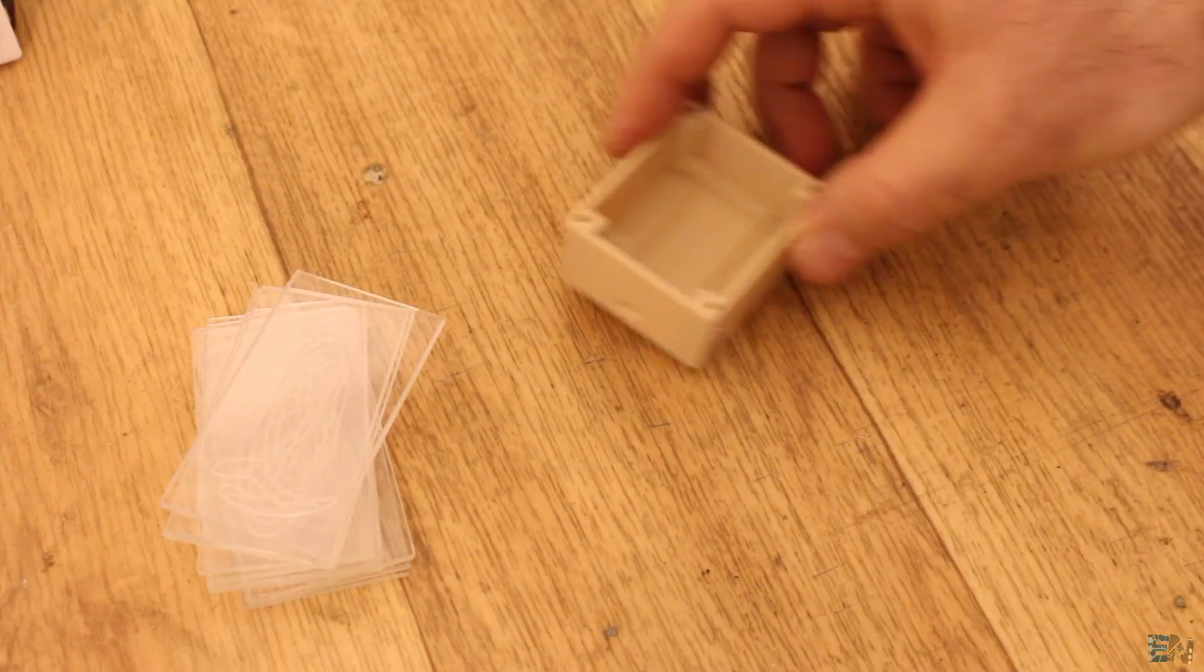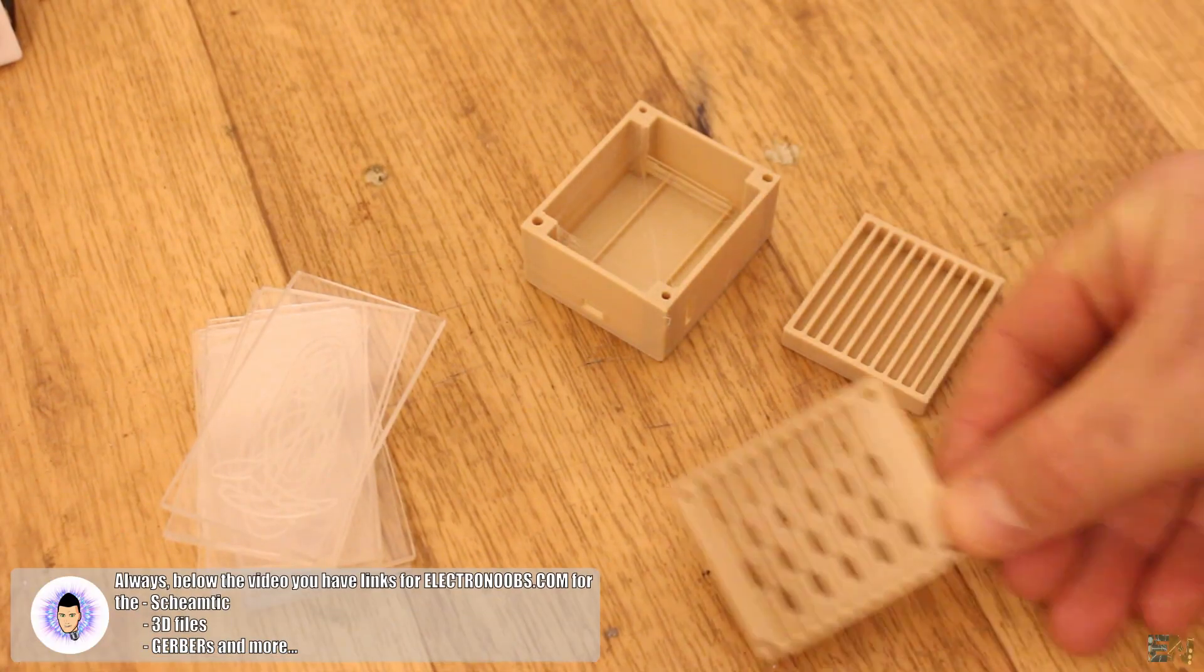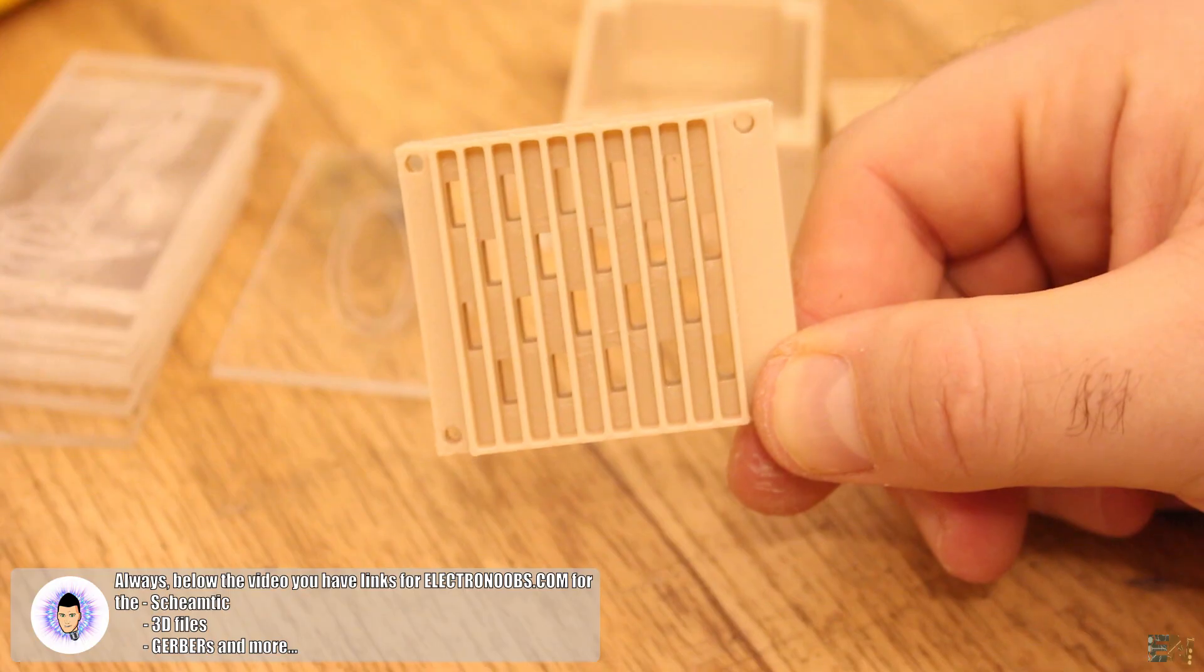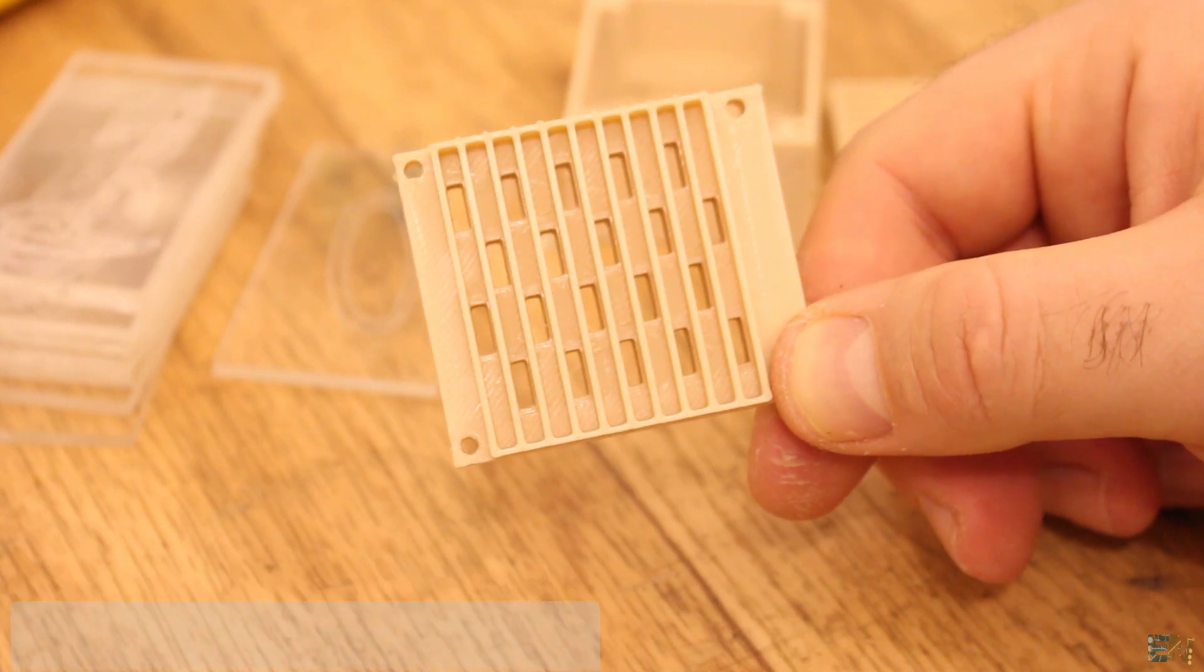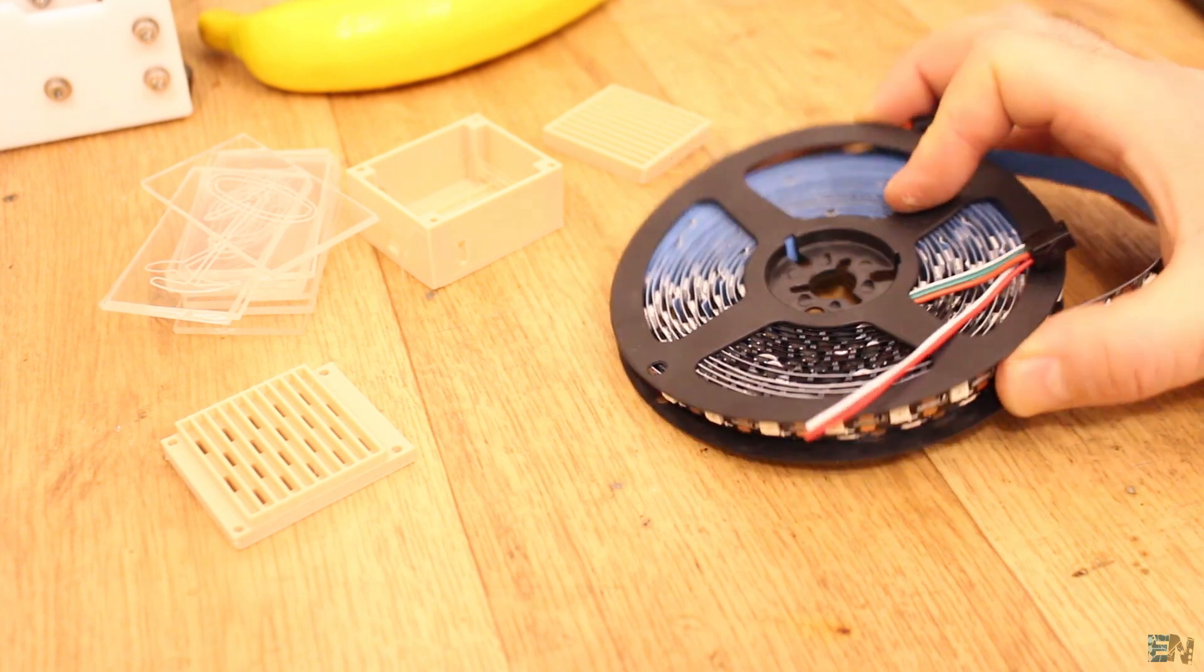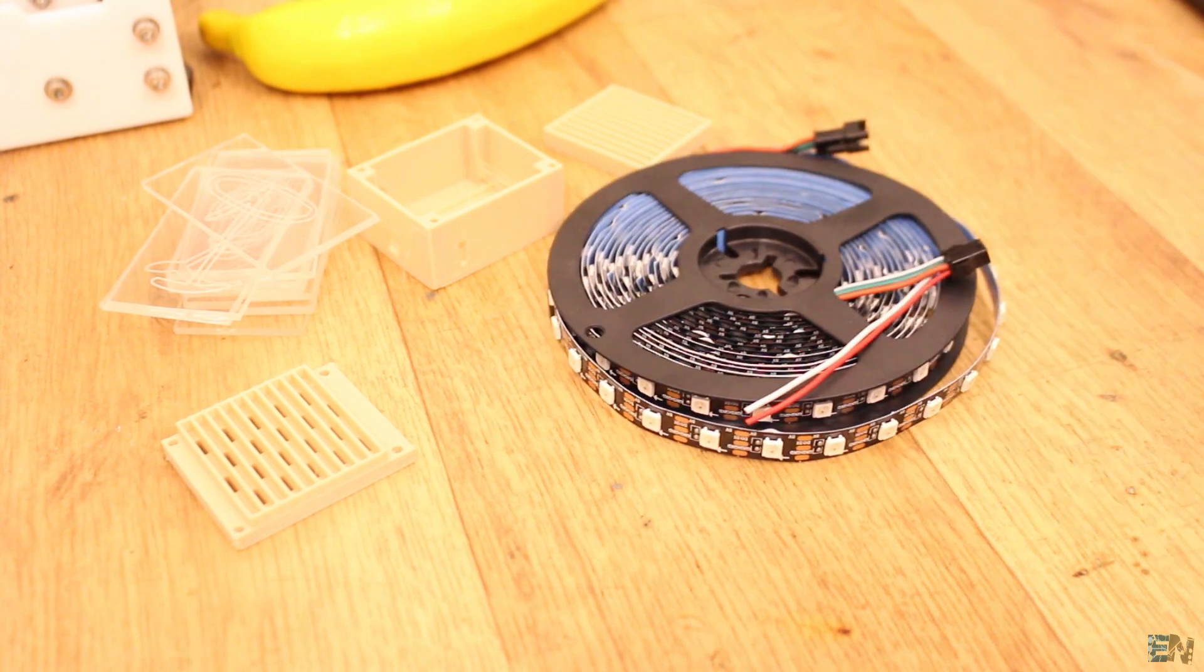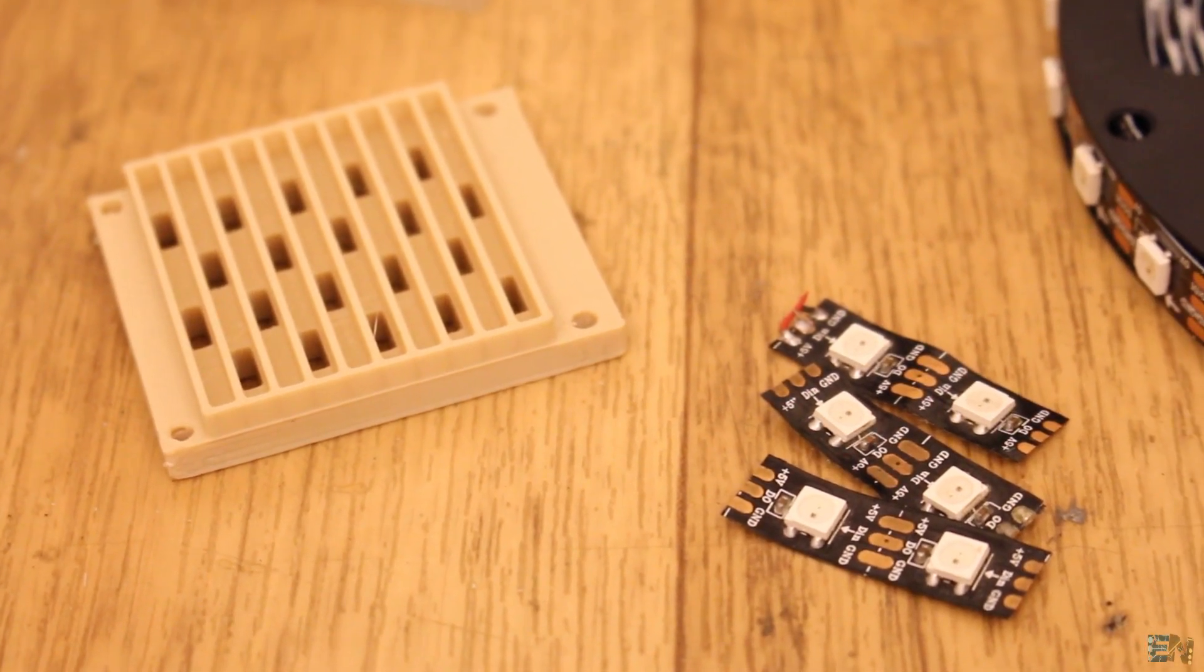Okay, now we have the acrylic boards with the numbers. To place this, I've designed this case and print it with PLA material. As you can see, it has 20 small holes for the light to pass through and shine on the plastic boards. Below this part, we have to place some of these WS2811 addressable LEDs. Two LEDs for each number.